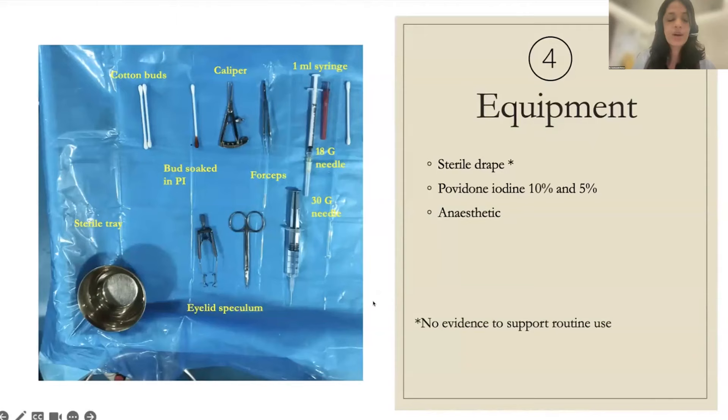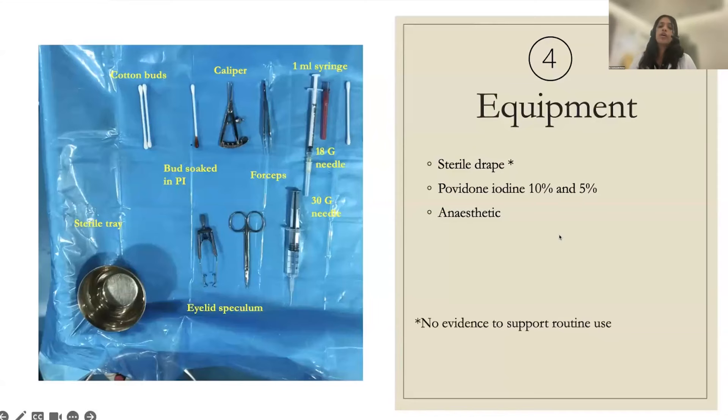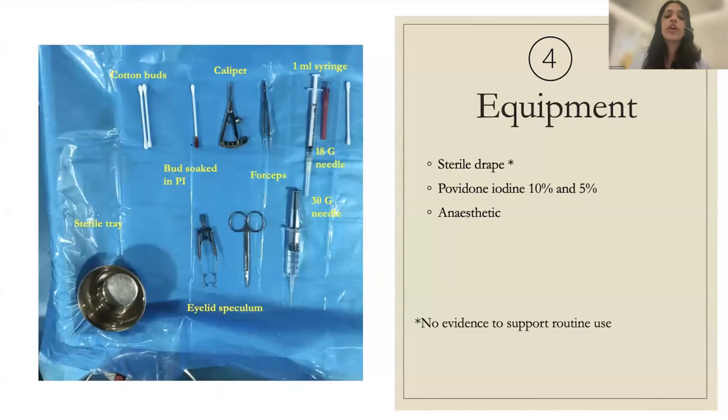Tip four — equipment: you need cotton buds soaked in povidone-iodine, calipers, forceps, a 1 ml syringe with a 30-gauge needle, an 18-gauge needle for drawing up, an eyelid speculum, a sterile drape, povidone-iodine 10% and 5%, and topical anesthetics. There is no strong evidence mandating a sterile drape as long as eyelashes are kept away from the injection area, but it is preferred by many practitioners.